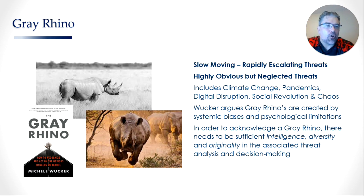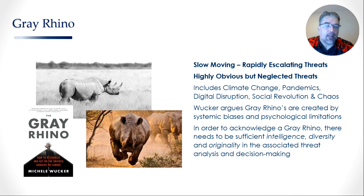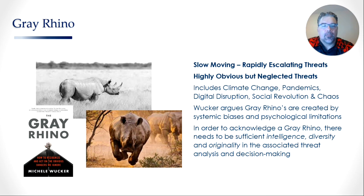This has great connotations for what we saw happen in 2020 with the pandemic. We were warned about this for decades — all the major global risk reports talked about escalating pandemic risk. Market signals in the 20 years leading up to 2020 showed a rapid escalation in viruses that could escalate to pandemic: HIV/AIDS, Hong Kong flu, SARS, MERS, swine flu, bird flu. We had repeated warnings, and most countries did nothing. It was only when the gray rhino came rapidly charging at us that we jumped into action. Wooker argues that in order to acknowledge a gray rhino, there needs to be sufficient intelligence, diversity, and originality in the associated threat analysis and decision-making.